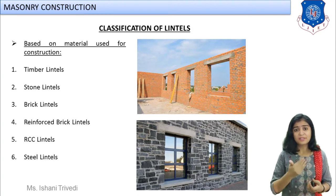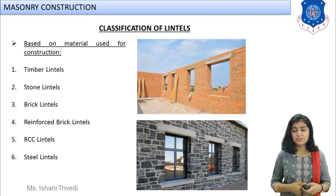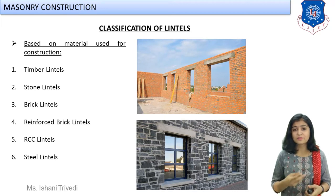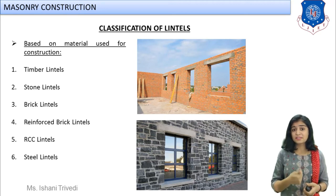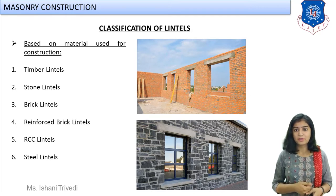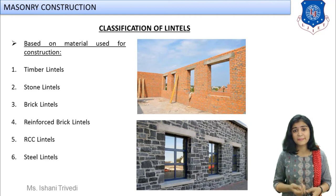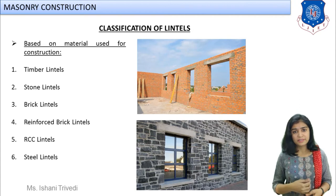The classification of lintels includes timber lintels, stone lintels, brick lintels, reinforced brick lintels, reinforced cement concrete (RCC) lintels, and steel lintels. Depending upon the span, the loads to be carried, and the masonry construction, various kinds of lintels are constructed. In one image you can see brick masonry construction with a concrete lintel provided; in another image, a stone lintel is visible at the top of a stone wall window.